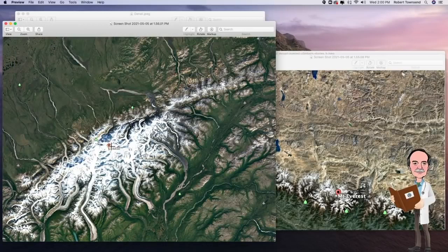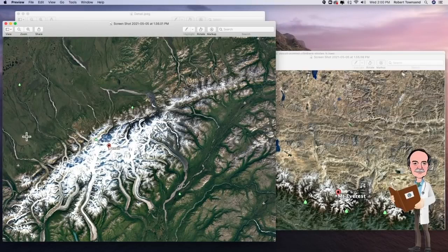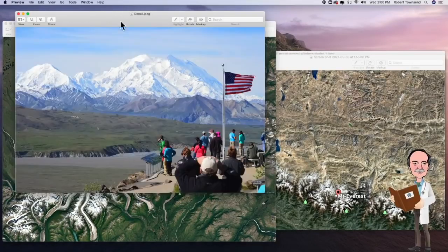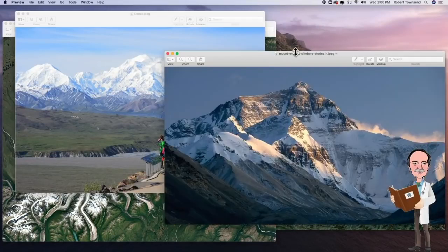If you look at Denali, this area of Alaska surrounding it is less than 2,000 feet high. So, that mountain has 18,000 feet of vertical relief. And as a result, that mountain looks bigger than that mountain.